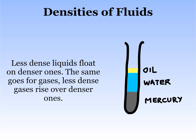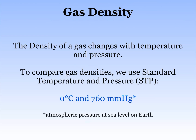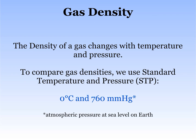Less dense liquids float on denser ones, and the same goes for gases — less dense gases rise over denser ones. The density of a gas is variable; it changes with temperature and pressure. So to compare gas densities, we use standard temperature and pressure, or STP, which is 0 degrees Celsius and 760 millimeters of mercury — that happens to be the atmospheric pressure at sea level on Earth.